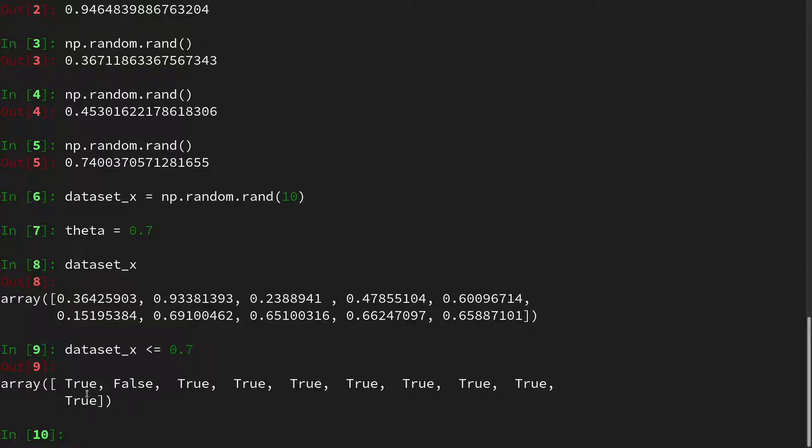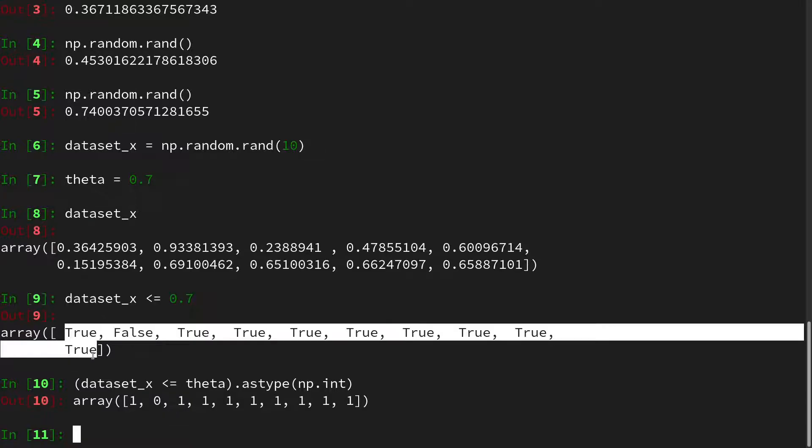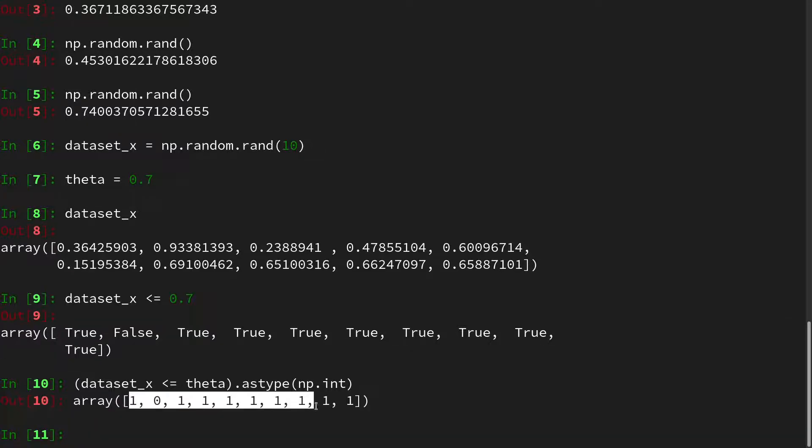And this is now encoded as a Boolean. And in order to get this as an integer, so we cast it. And so we use data set X smaller equal 0.7, or our theta in the case. And use astype and cast it into an integer. And then we see, well, this is the same just as the encoding that we used. And here we have a sample set.